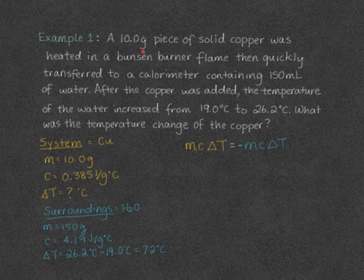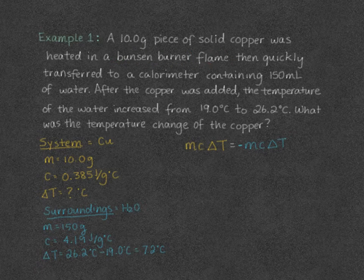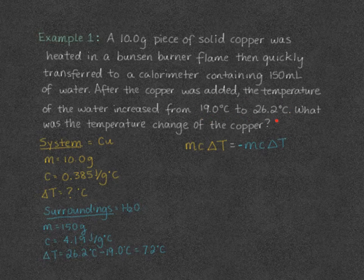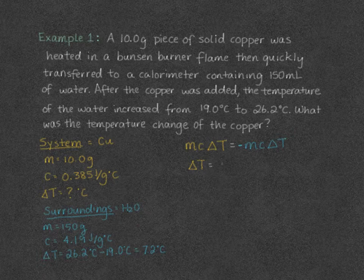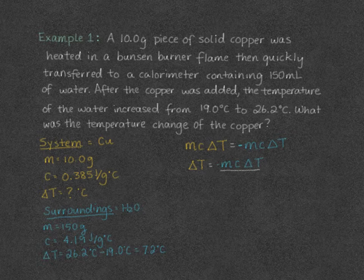The copper started in a fire and is being put into water, so it's going to cool down — that's going to experience a negative energy change. Our water is going to get warmer because something hot is being added to it, so it experiences a positive temperature change. This negative sign just helps us equate the two. We're going to rearrange this equation to solve for the change in temperature of copper by dividing both sides by the mass times the specific heat capacity of copper.